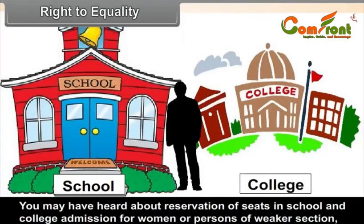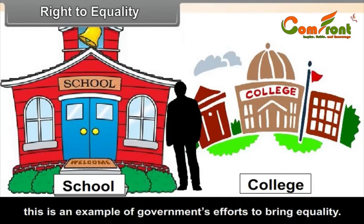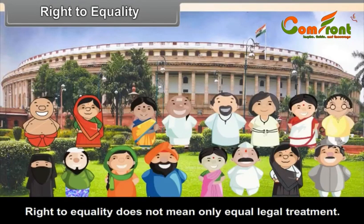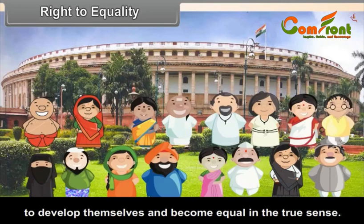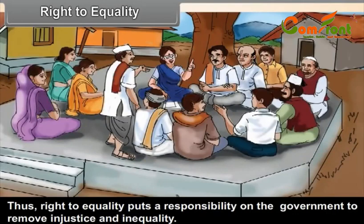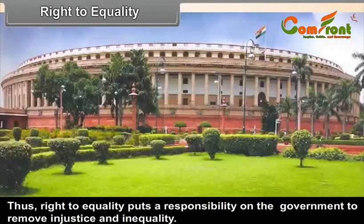Reservation of seats in school and college admissions for women or persons of weaker sections is an example of the government's efforts to bring equality. Right to equality does not mean only equal legal treatment — it also means that groups which are backward and traditionally discriminated against must get the opportunity to develop themselves and become equal in the true sense. Thus, right to equality puts a responsibility on the government to remove injustice and inequality.